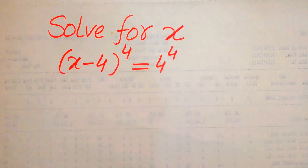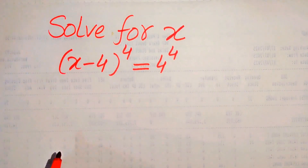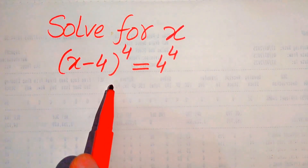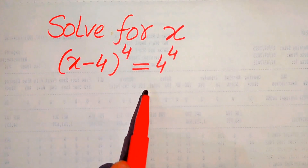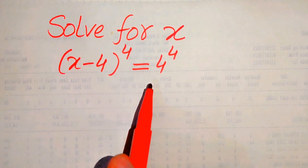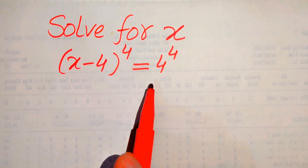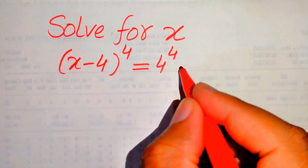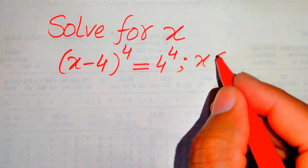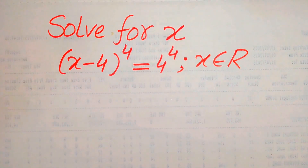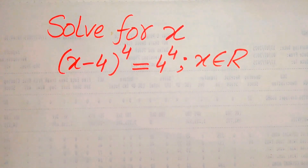Hello everyone. How to solve this problem for the values of x if we have (x minus 4) to the power of 4 equals 4 to the power of 4. This is a fourth-order equation and we will solve this problem for the real values of x only, which means we find just the real roots of this equation.